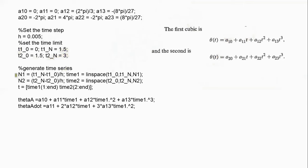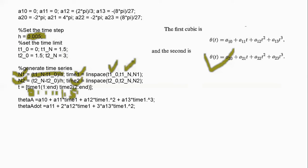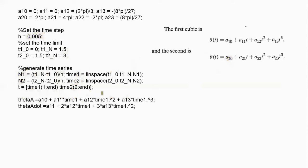Using n1, generate a time series called time1 starting from t10 and ending at t1n, increasing with an increment of 0.005. Similarly, generate the corresponding number of time instances for the second cubic to get time2. Then merge time1 and time2 to get the complete time from 0 to 3 seconds.